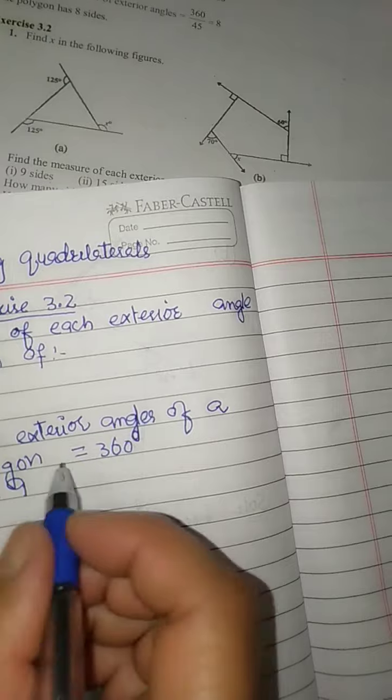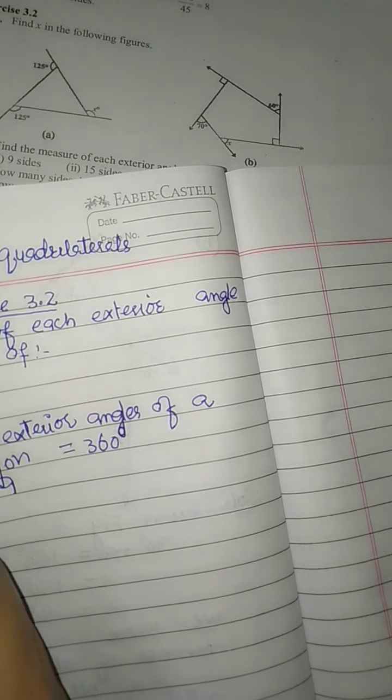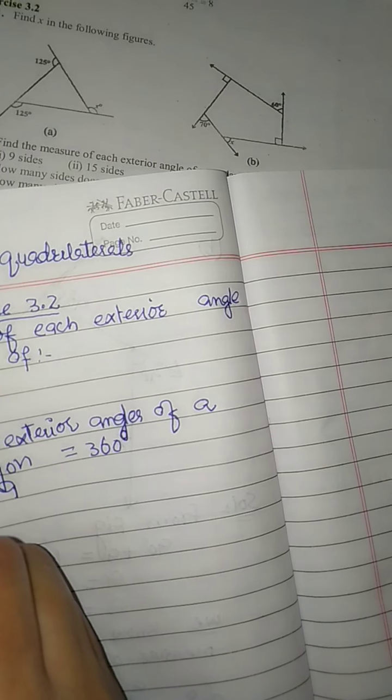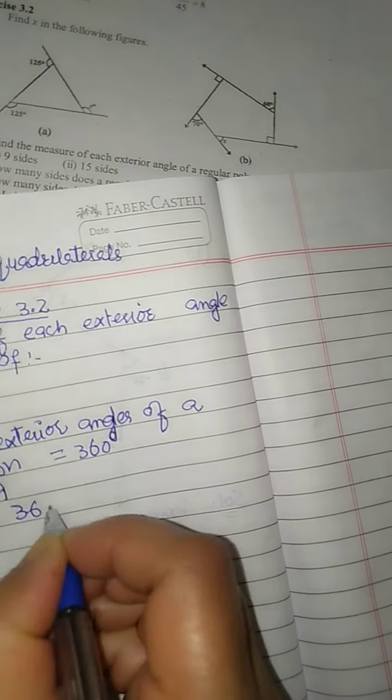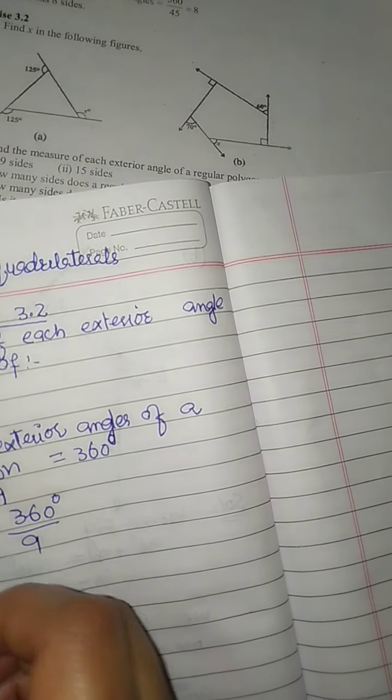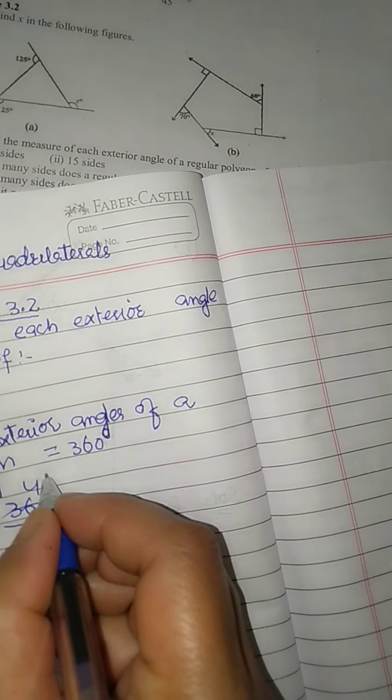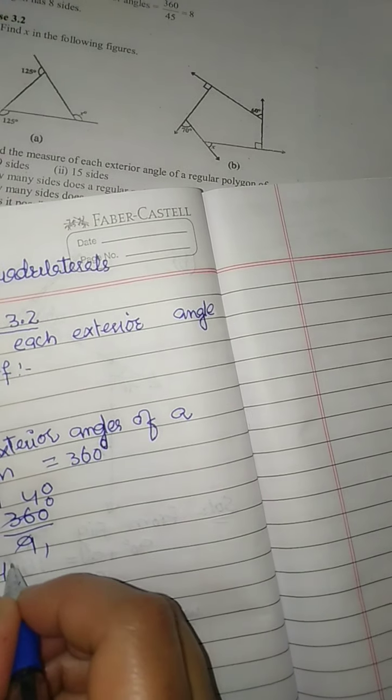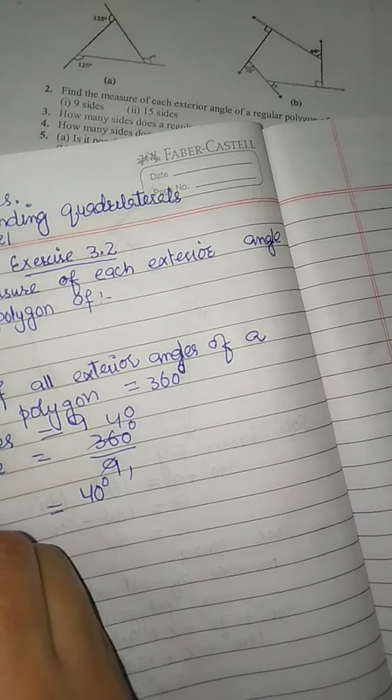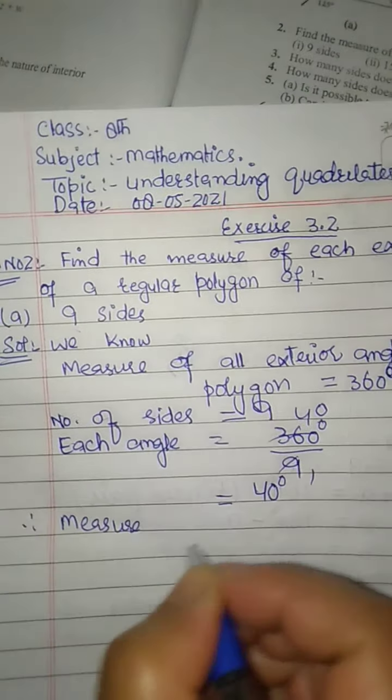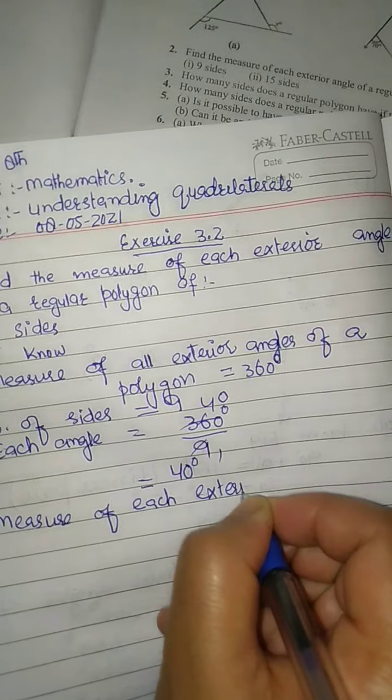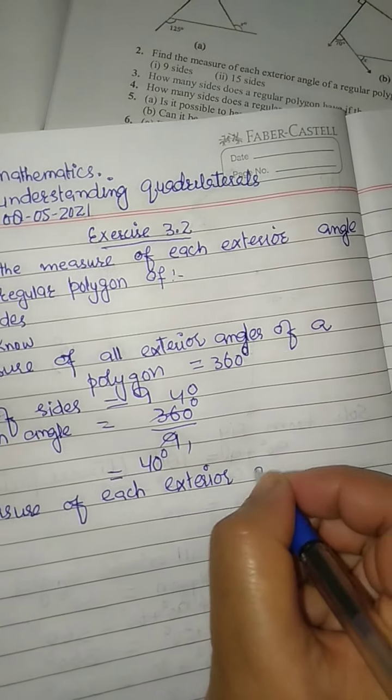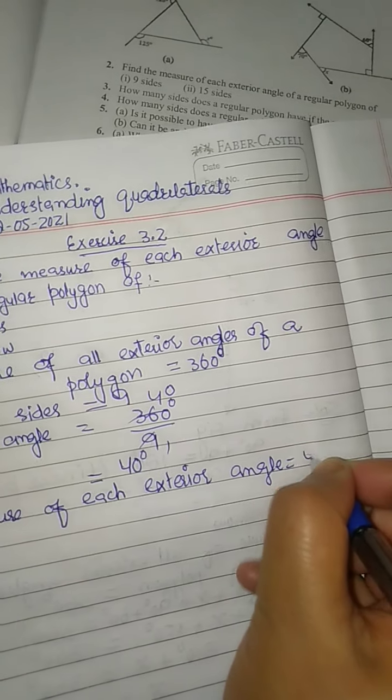So each angle is equal to 360 degrees divided by 9. 360 divided by 9: 9 goes into 36 four times, giving us 40 degrees. Therefore, the measure of each exterior angle is 40 degrees.